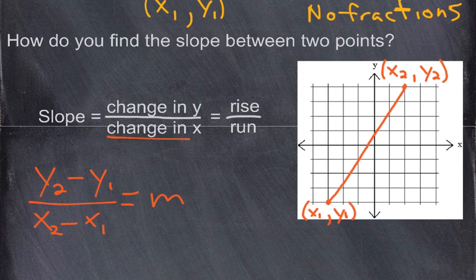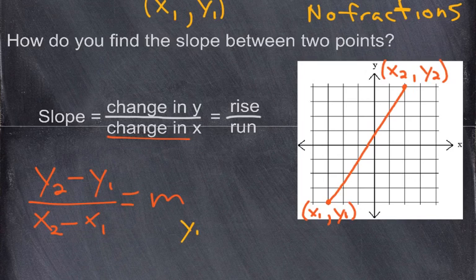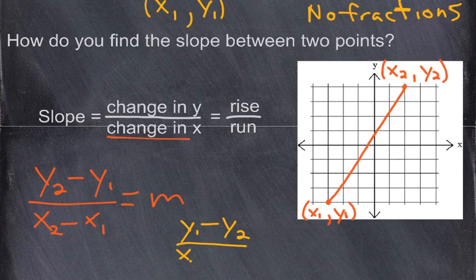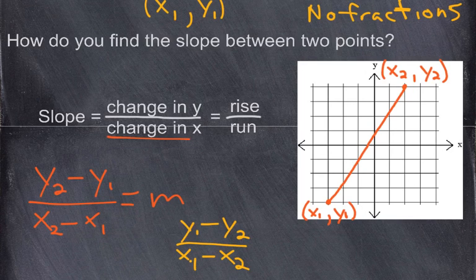We could have said y1 minus y2, but if we started with y1 on top, we have to start with x1 on bottom. So it doesn't matter which y you start with, as long as the y you start with on top has its matching x value on the bottom.